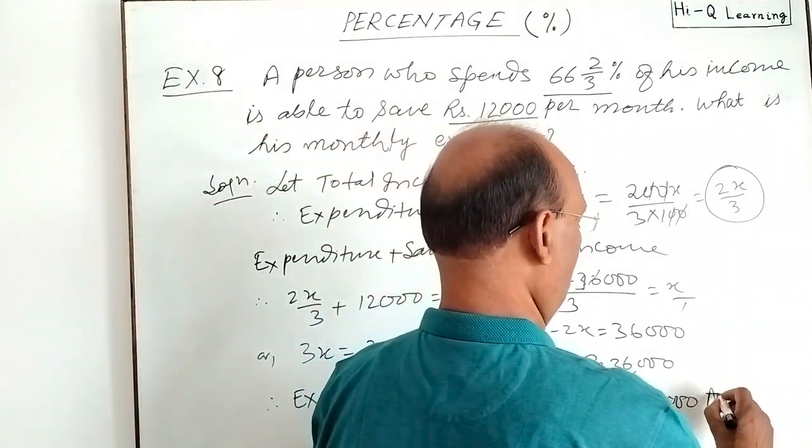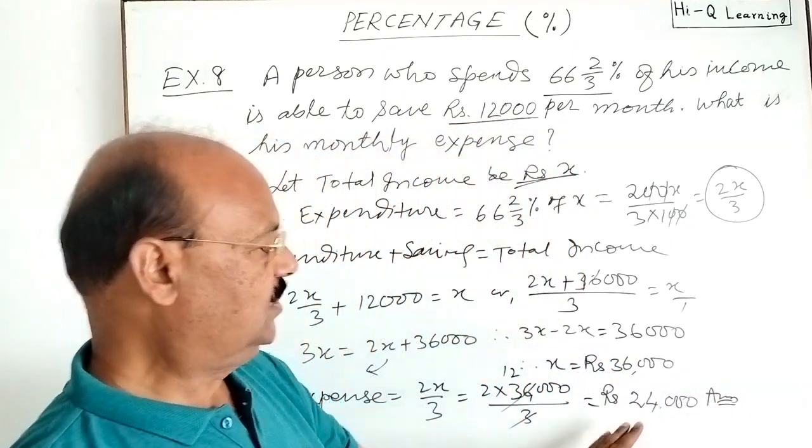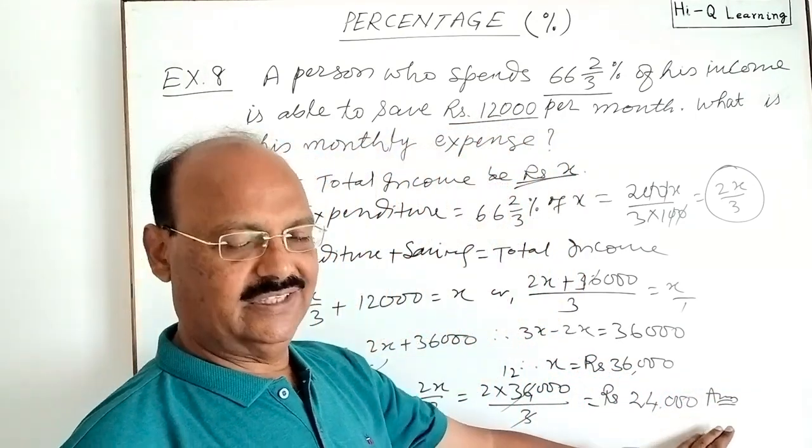So this is the answer. This is the expense, monthly expense of the person. So monthly expenditure of the person is how much? 24,000. This is the answer.